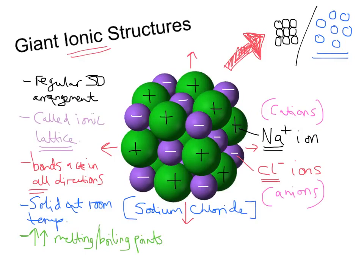Ionic compounds are usually soluble in water, because water molecules have a slight electrical charge and can attract the ions away from the lattice. When dissolved, the ions are free to move and can carry an electrical current.